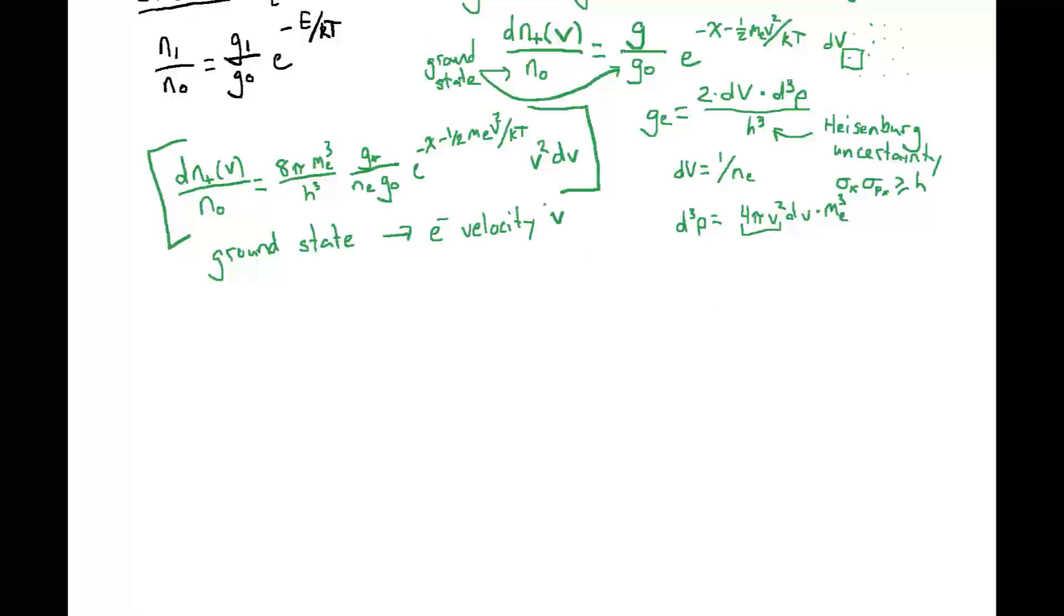But now we'd like to do all the different velocities that we could end up with. We would like to integrate over velocity v. So when we integrate over v, we'll get the total number density of ions up here, but we have to integrate all the terms that have v in them on the right-hand side. So if we do a change of variables to take x to be the square root of me over 2kT times v, then our equation becomes n+ over n0 is equal to 8π me cubed over h cubed g+ over number density of electrons times g0.